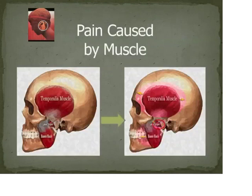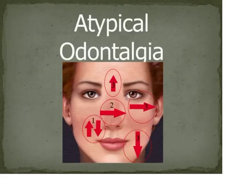Now let's take a closer look at the type of pain that the different jaw structures can produce, and let's start with the musculature first. Let's also take a closer look at what is termed atypical odontalgia.